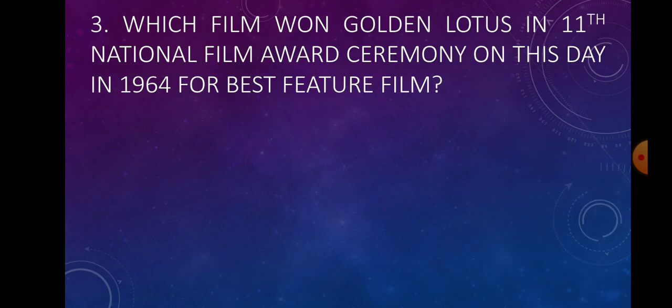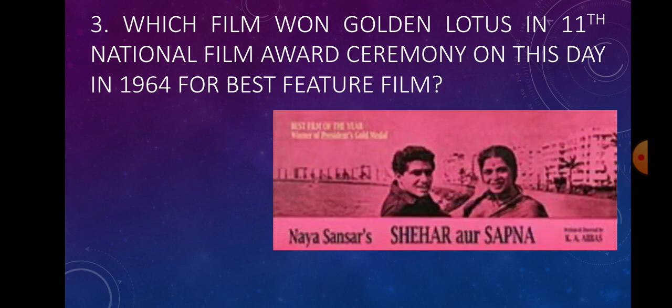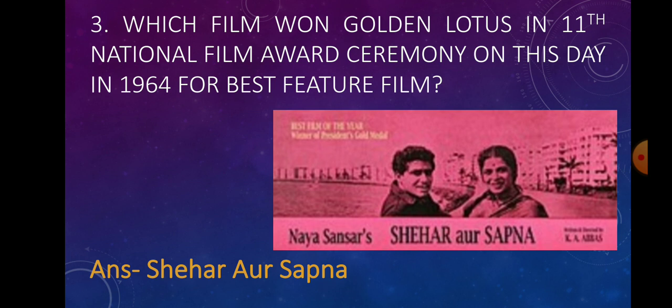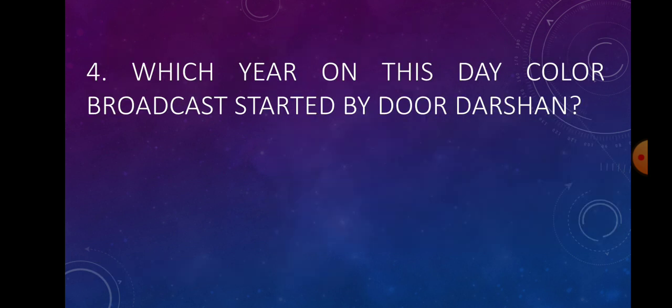Question number three: Which film won the Golden Lotus at the 11th National Film Award ceremony on this day in 1964 for the best feature film? Answer: Seher or Sapna. Question number four: Which year on this day did color broadcast start on Doordarshan? Answer: 1982.